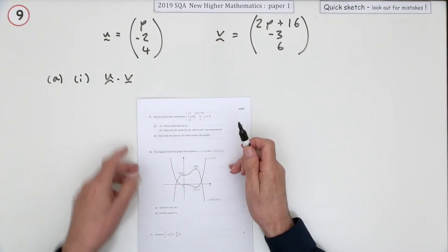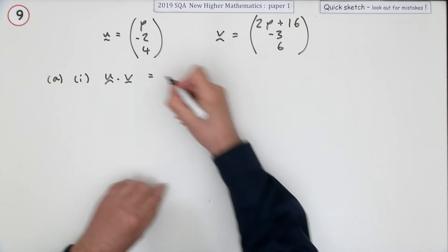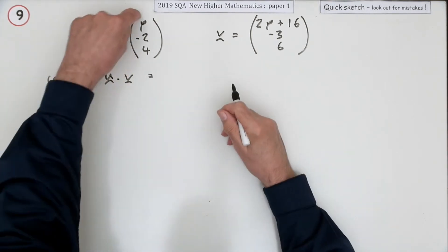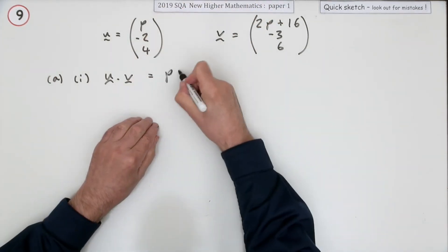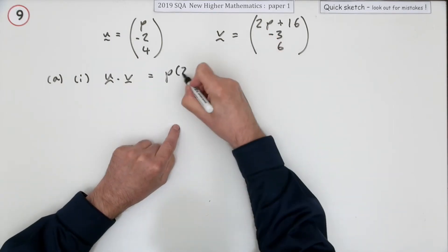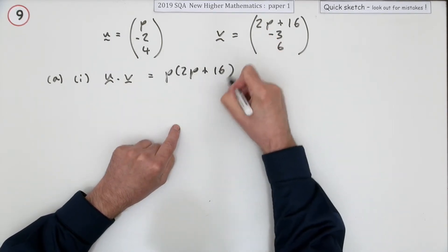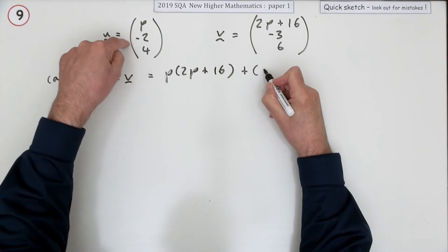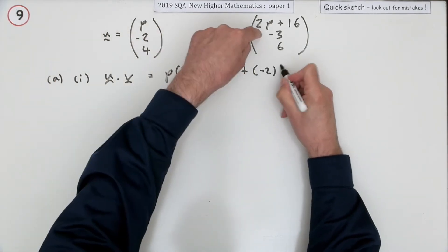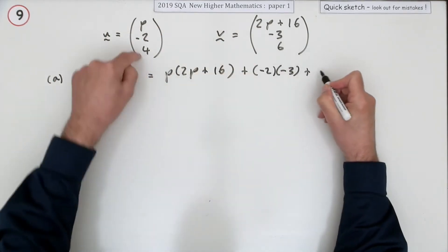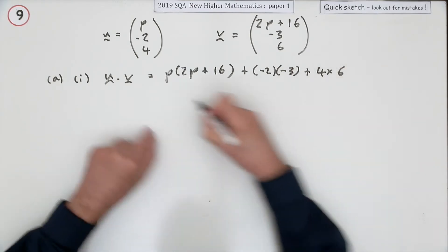Well, that'll be multiply the corresponding components: p times 2p plus 16, plus now the y components, -2 times -3, then the z's, 4 times 6.